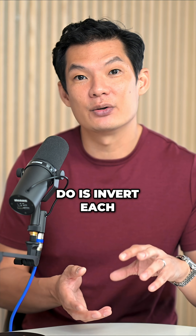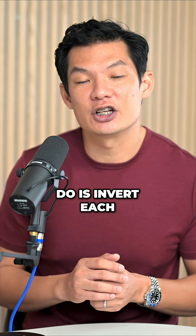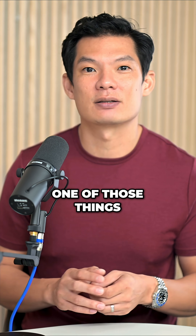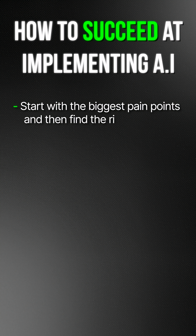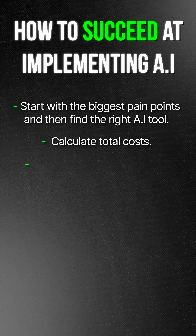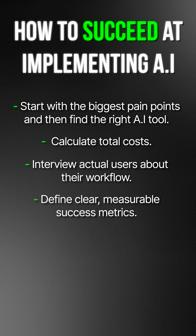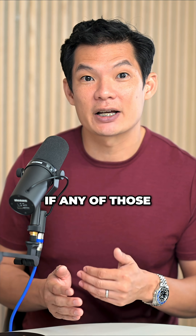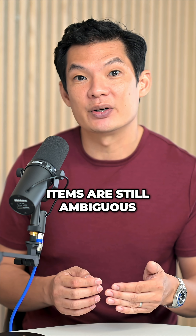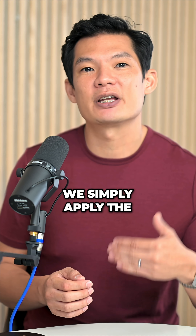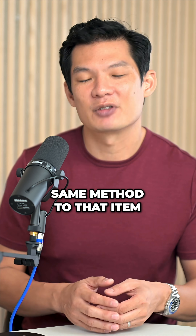Now, all you have to do is invert each one of those things. I should start with the biggest pain points, then find the right AI tool. I should calculate total costs. I should interview actual users about their workflow. I should define clear, measurable success metrics. If any of those items are still ambiguous, we simply apply the same method to that item.